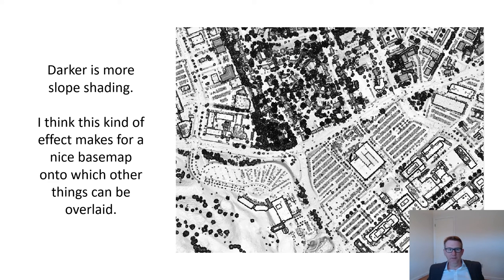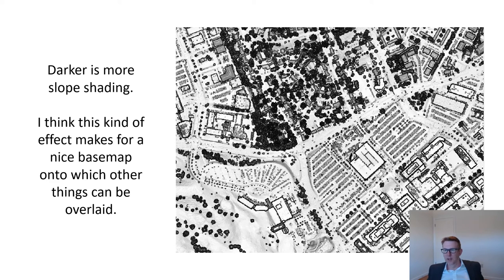This is a more classic view — darker is more slope shading, sort of what we're used to seeing. I think it makes a really nice background for a lot of other things. Buildings and the environment make a lot of sense under this. Most of the land renders as kind of white. Building edges are usually pretty crisp. The trees kind of look like an artist sketched them, in my opinion. Just kind of an interesting, neat way of seeing this stuff.